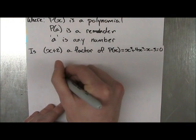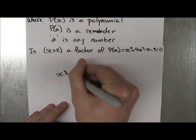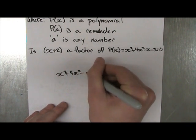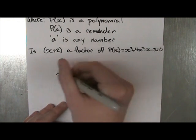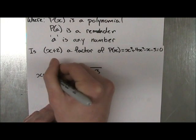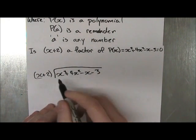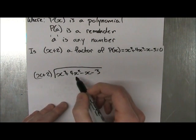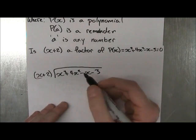So we're gonna take our polynomial, and we're gonna divide it by our proposed factor. Now if this is a factor of this, then the remainder should be 0. So let's see if it works.